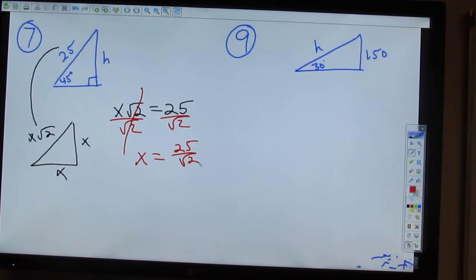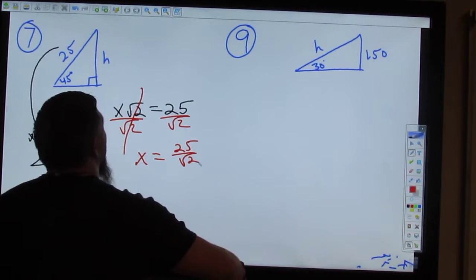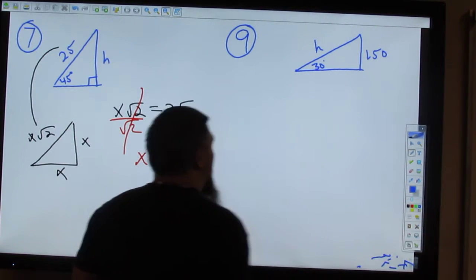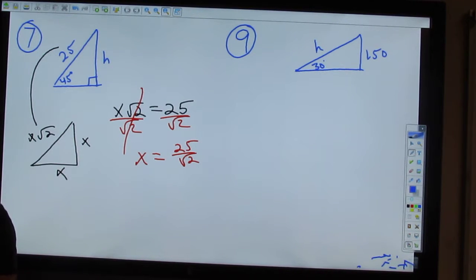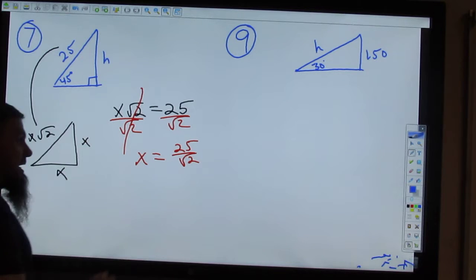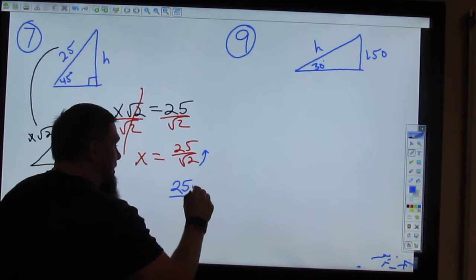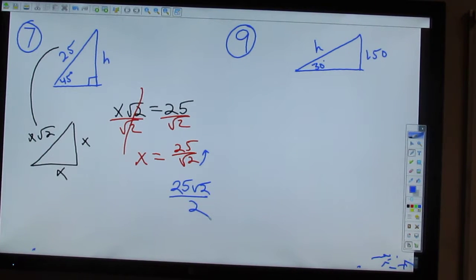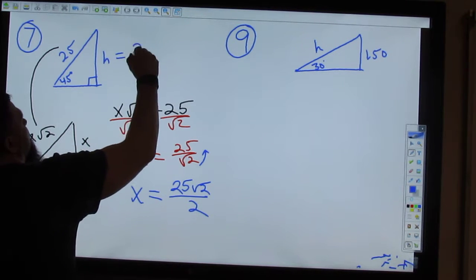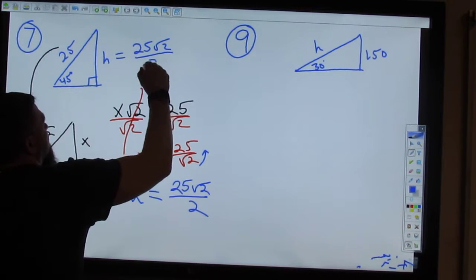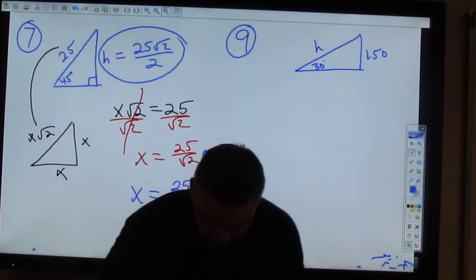But we can't have the square root of 2 in the bottom. Who remembers the trick method? Multiply by the square root of 2. Now, you could multiply by the square root of 2, or you could know the trick. Guys, move it to the top. Remember yesterday? 25 square roots of 2 over 2. It's that simple. Move it to the top, and keep the number down below. Now, this is what X is. So, that's what H is. Is that right? Yep. Yay!